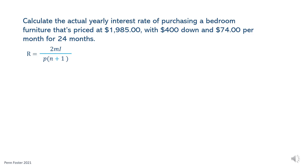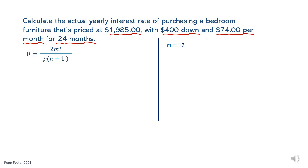First, read the question. Calculate the actual yearly interest rate of purchasing a bedroom furniture that's priced at $1,985 with $400 down and $74 per month for 24 months. Now let's assign values to M and N. M equals 12 since payments are monthly. N equals 24 — that's the course of the agreement.